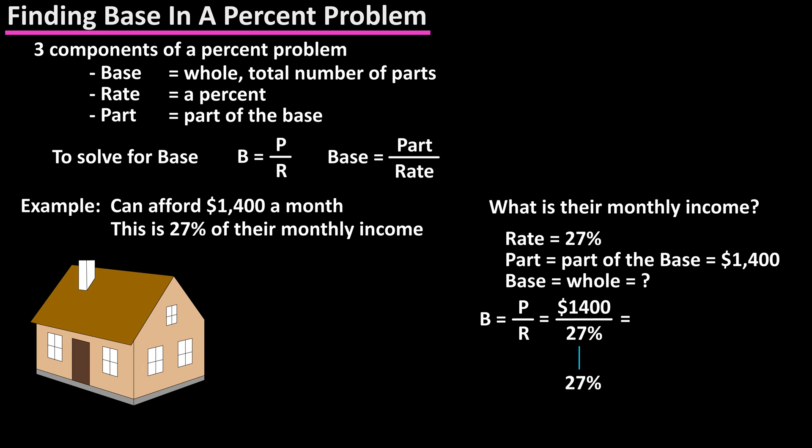To convert percent to a decimal, we would drop the percent sign and move the decimal point two places to the left to get 0.27.